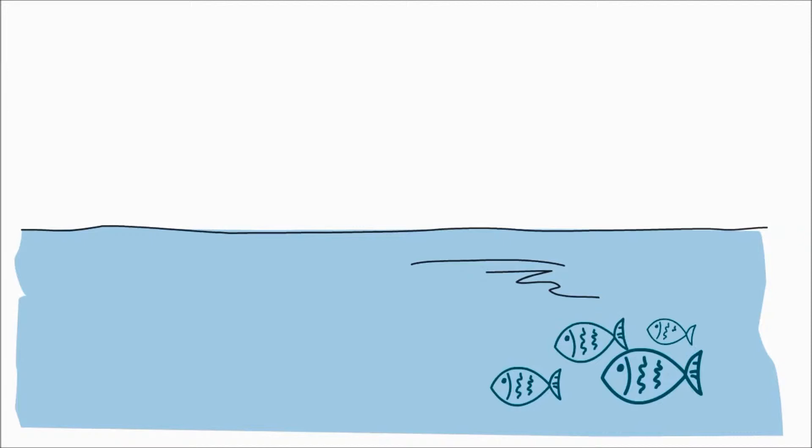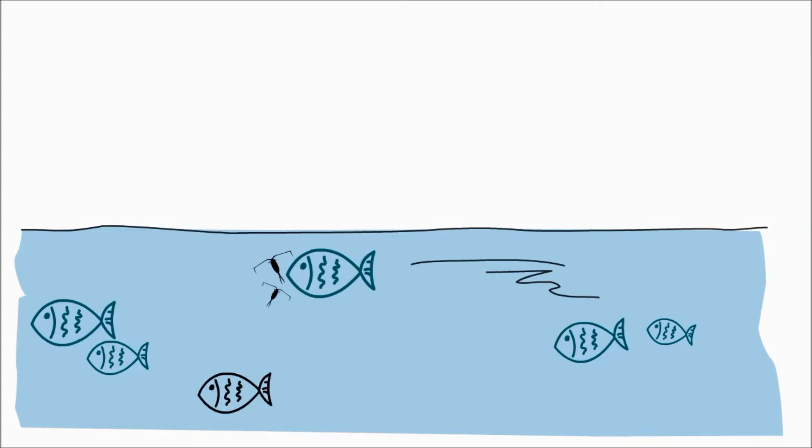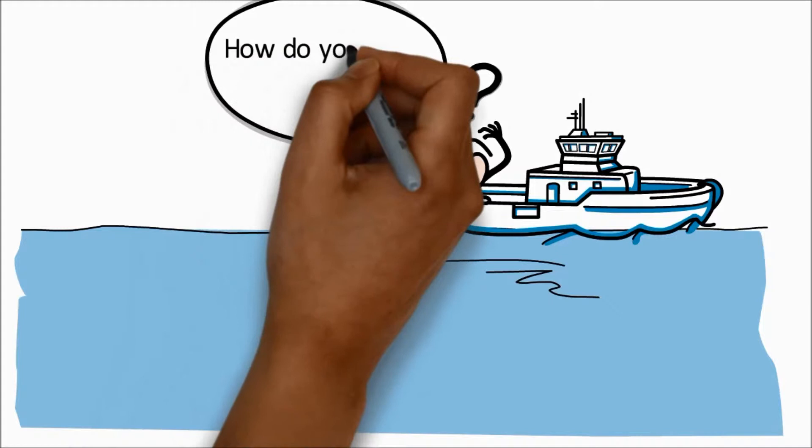Fish distribution is patchy because they move about looking for food and places to spawn eggs. And fish can't be seen or counted directly. So how are fish stocks monitored?